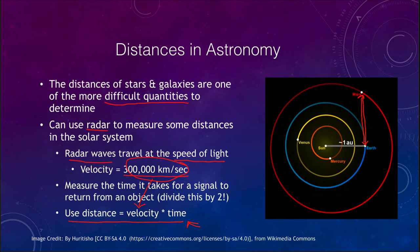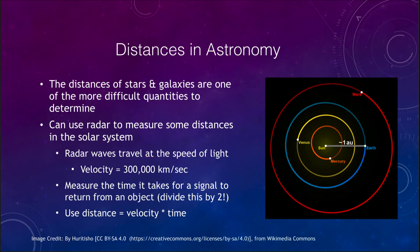This will help within the inner part of the solar system, but the distances involved are much too far to use radar for any kind of star or even objects in the outer solar system. One key point: when we measure this we are measuring the distance there and back, so we want to divide the time by two to actually find the distance to Mars, because the radar wave traveled twice the distance between Earth and Mars. So that's one way to determine distances.